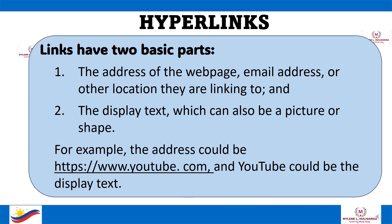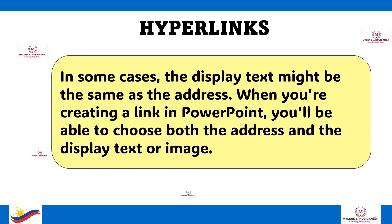Links have two basic parts: first, the address of the web page, email address, or other location they are linking to; and the display text, which can also be a picture or shape. For example, the address could be https://www.youtube.com, and YouTube could be the display text. In some cases, the display text might be the same as the address. When you're creating a link in PowerPoint, you'll be able to choose both the address and the display text or image.